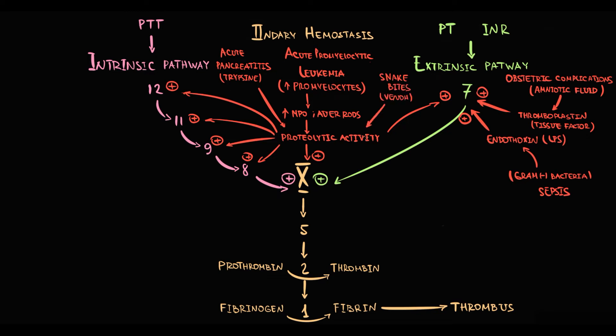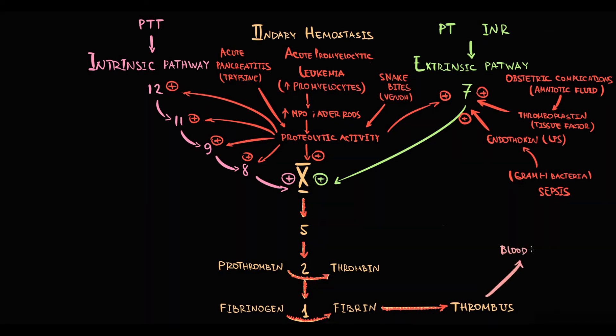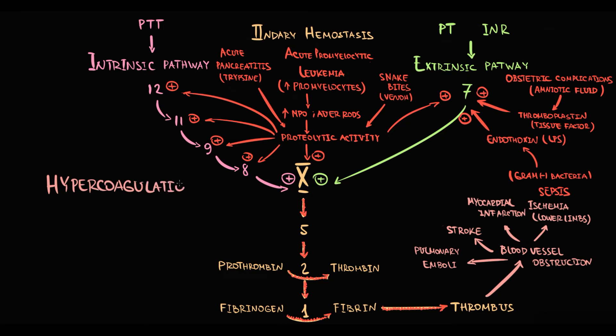In all cases, strong activation of coagulation factors will finally cause formation of a massive amount of thrombi. Thrombus can cause obstruction of blood vessels. Obstruction typically can cause ischemia of the lower limbs. Obstruction of the coronary circulation can cause myocardial infarction. Obstruction of brain vessels can cause stroke. Thrombi can also cause obstruction of the pulmonary circulation that will cause pulmonary embolism. In the hypercoagulation phase of DIC, the major problem is formation of a massive amount of thrombi that can cause ischemia, infarction, or pulmonary embolism.